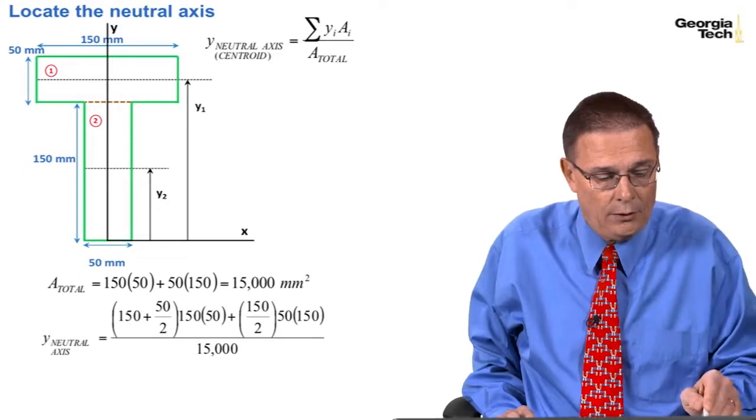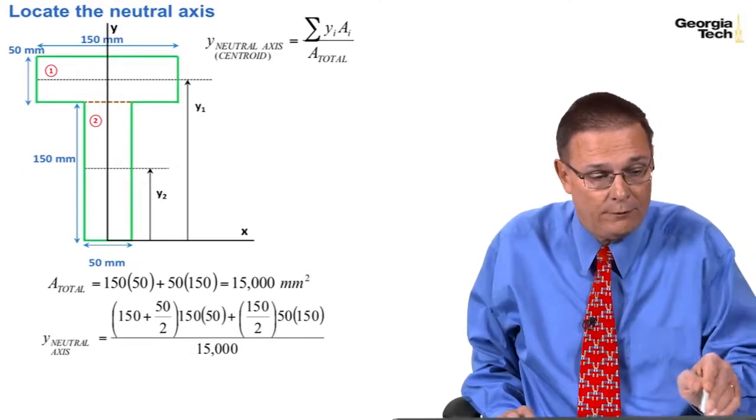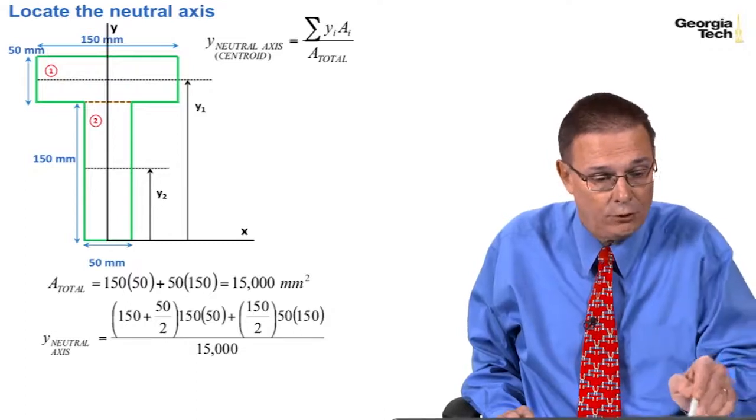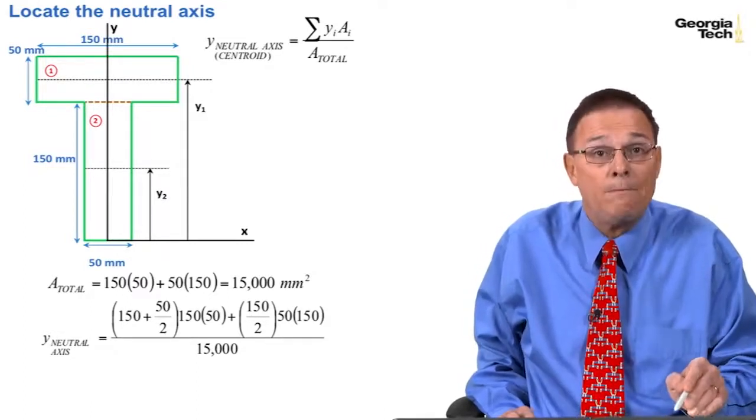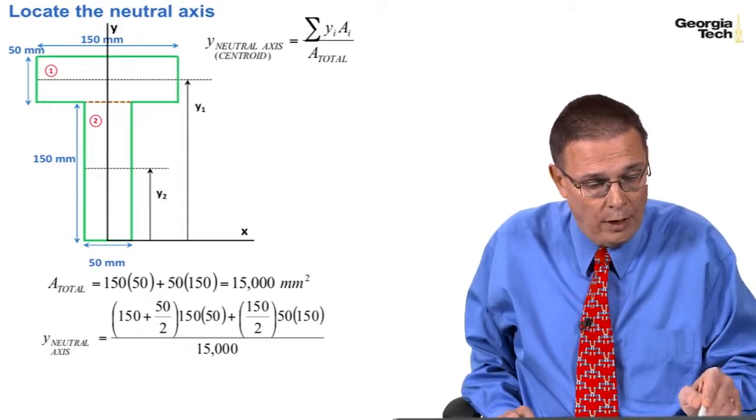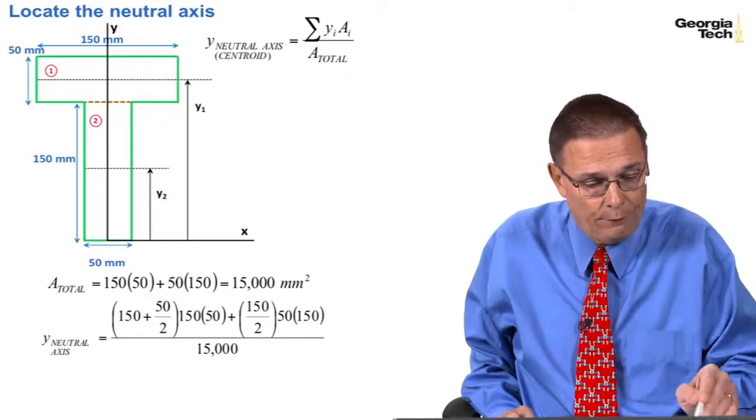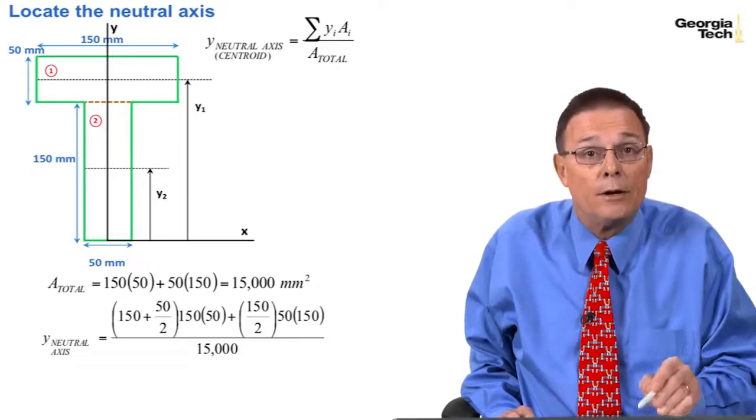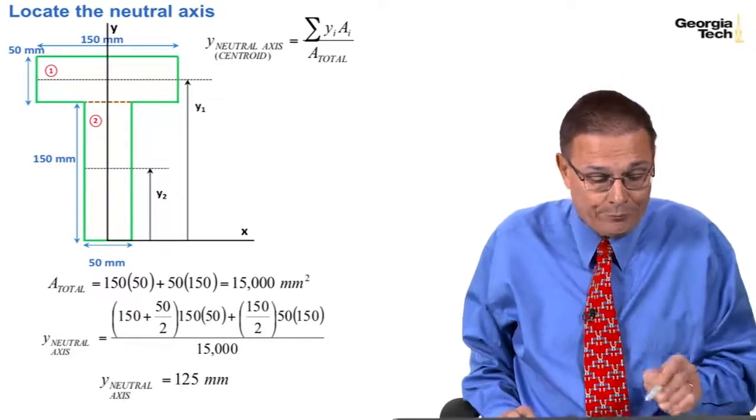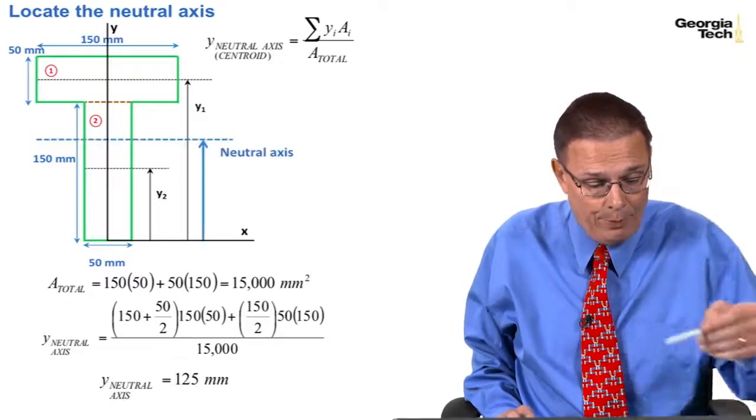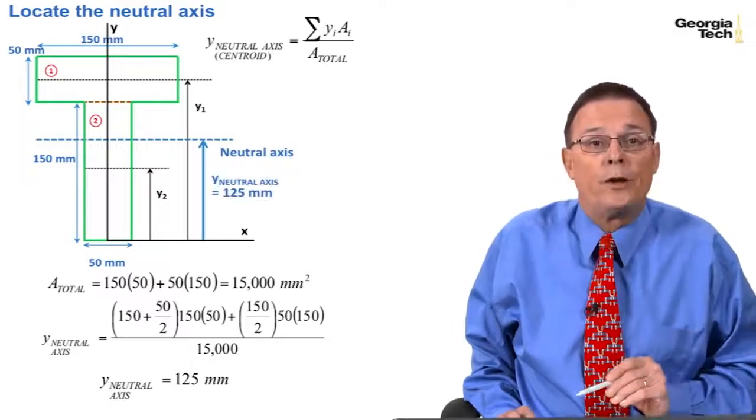And y neutral axis is y1, which is 150 again, plus 50 divided by 2 to this neutral axis times the area of 150 times 50, plus the y2, which is 150 divided by 2 for this rectangle times its area, which is 50 times 150, divide that by the total area, and I get my neutral axis up from the bottom of being 125 millimeters.